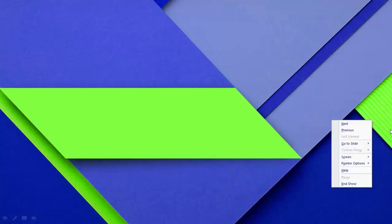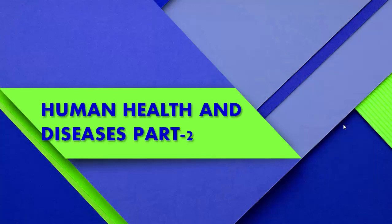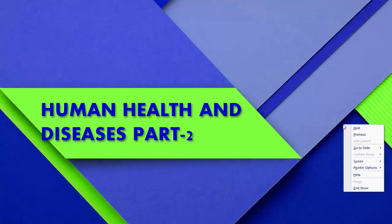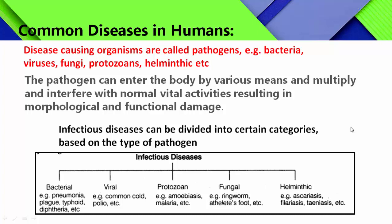Let us continue the next part of human health and diseases. In the previous video, I explained about the introduction of this topic. Health is defined as complete well-being of an individual with respect to physical, mental and social conditions. Health is affected by genetic disorders, infections, and lifestyle. Good health can be maintained by balanced diet, personal hygiene, proper disposal of wastes, vaccination and immunization.